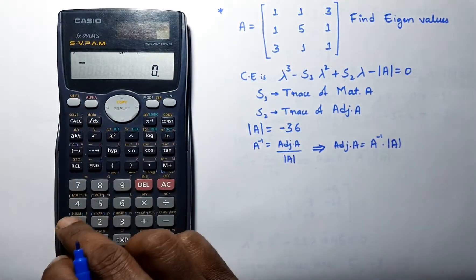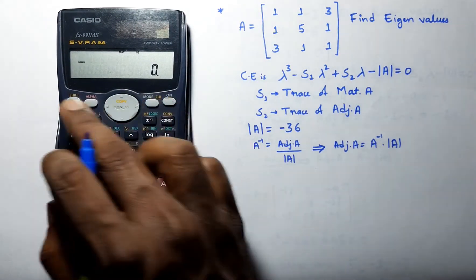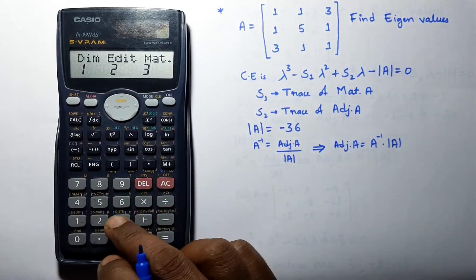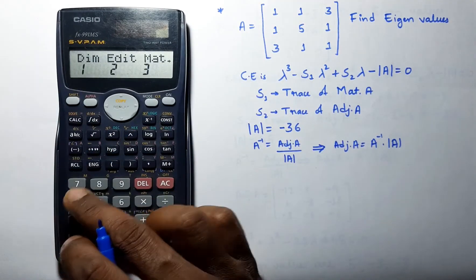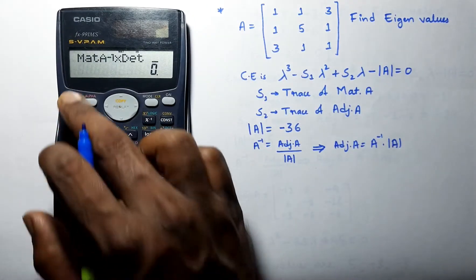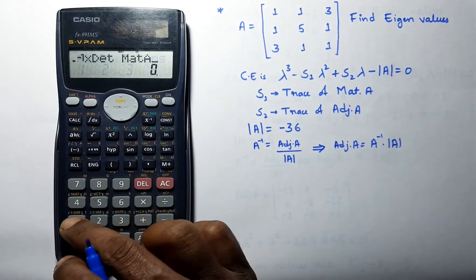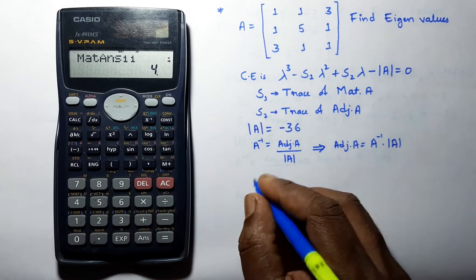Let's find this out. Go to matrix, select matrix A inverse times determinant of A, and we will get this matrix.